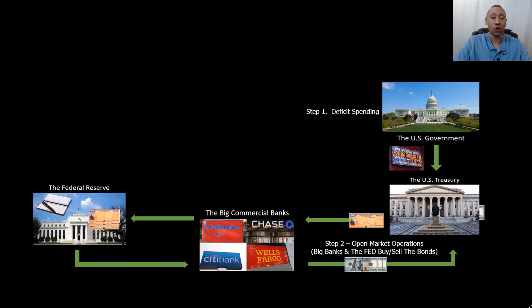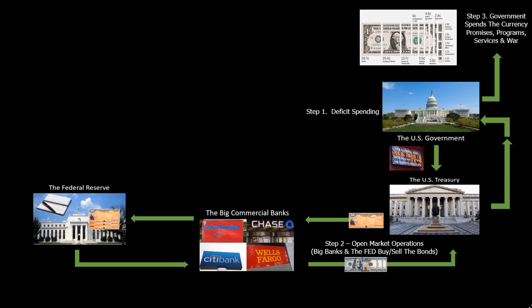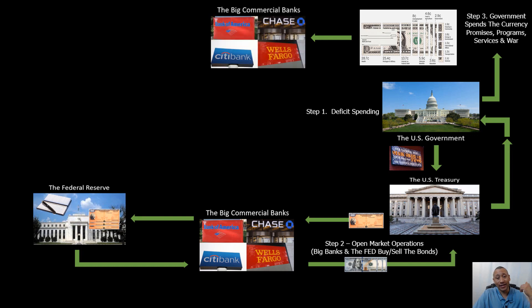That currency can then go back to the Treasury Department. Once the funds go to the Treasury Department, it's turned over to the government, where they can finally begin with step three — making good on all of their promises. Step three is how money and currency actually gets circulated to the general public, because all of the folks that work for the government, work on social programs, or are in the military are getting paid government checks. They get their check and have to take it right back to the commercial banks to deposit.